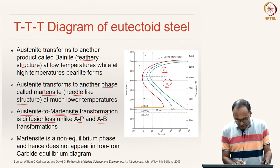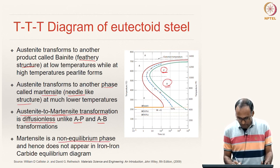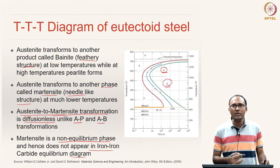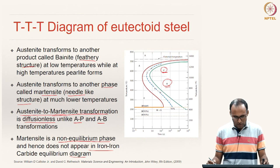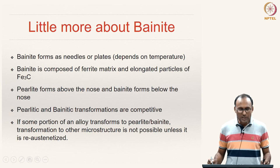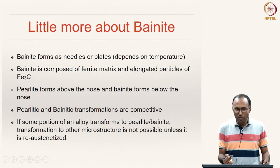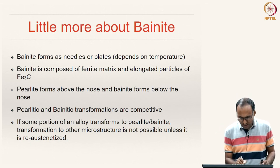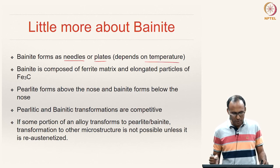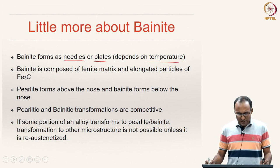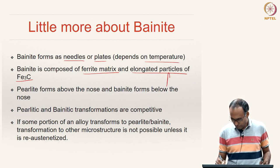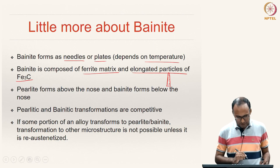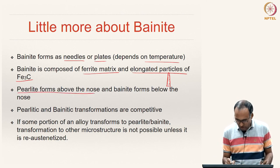Martensite is a non-equilibrium phase and hence does not appear in the iron-iron carbide equilibrium diagram, which only shows equilibrium phases. Bainite is composed of a ferrite matrix with elongated particles of cementite — elongated cementite particles embedded in a ferrite matrix — which distinguishes it from the lamellar structure of pearlite. As discussed, pearlite forms above the nose and bainite forms below the nose.